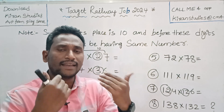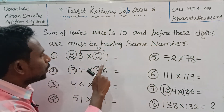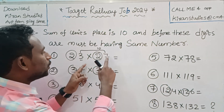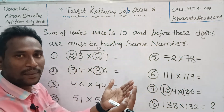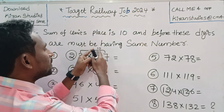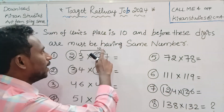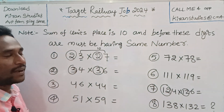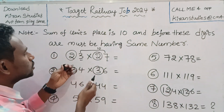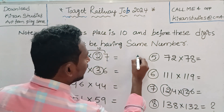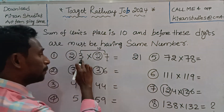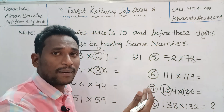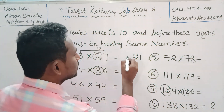For example, 23 into 27. Here the unit digits are 3 and 7. The trick is: directly multiply the units place — 7 times 3 is 21. The tens digit is the same number, 2. The next step is 2 times 3 is 6. So the answer is 621.